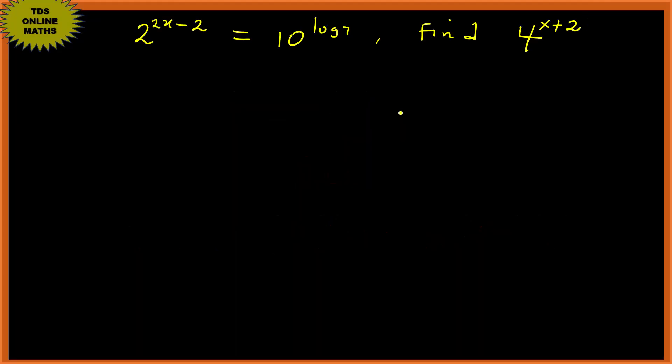Alright, let's find 4 raised to x plus 2, given 2 raised to 2x minus 2 equals 10 to the power of log 7.